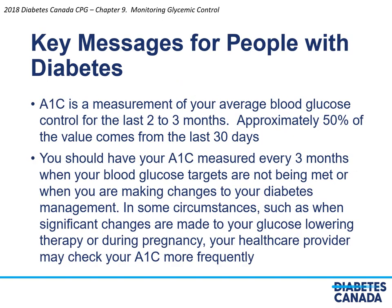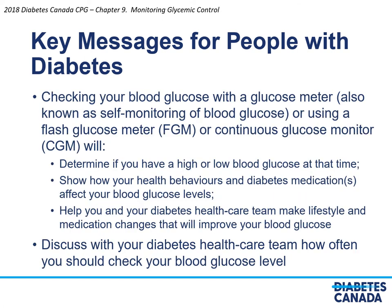Chapter 9, Monitoring Glycemic Control — key messages for people with diabetes. A1C is a measurement of your average blood glucose control for the last two to three months; approximately 50% of the value comes from the last 30 days. You should have your A1C measured every three months when your blood glucose targets are not being met or when you are making changes to your diabetes management. In some circumstances, such as significant changes to your glucose-lowering therapy or during pregnancy, your healthcare provider may check your A1C more frequently. Checking your blood glucose with a glucose meter — SMBG — or using a flash glucose meter or continuous glucose monitor, CGM, will determine if you have high or low blood glucose at that time, show how your health behaviours and diabetes medications affect your blood glucose levels, and help you and your diabetes healthcare team make lifestyle and medication changes that will improve your blood glucose.